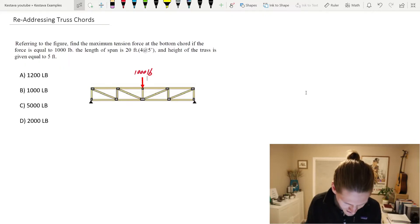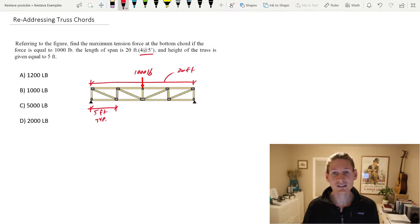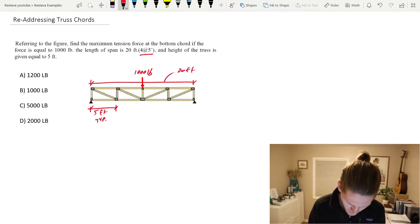So some of you long-time team members, you'll recognize this problem. It's a few videos back in our PE prep journey. Referring to the figure, find the maximum tension force at the bottom chord if the force is equal to 1,000 pounds. The force being applied at that point load at the center of the truss, as I've drawn in red. The length of the span is 20 feet, four at five feet. So that's four bays, five foot typical each bay. And the height of the truss is given as five feet.